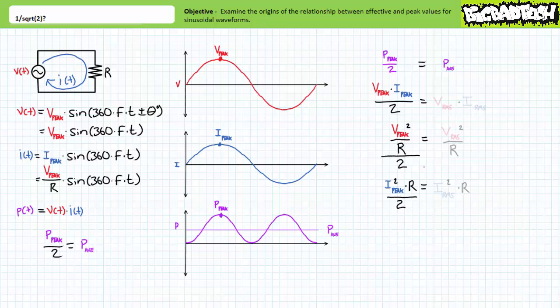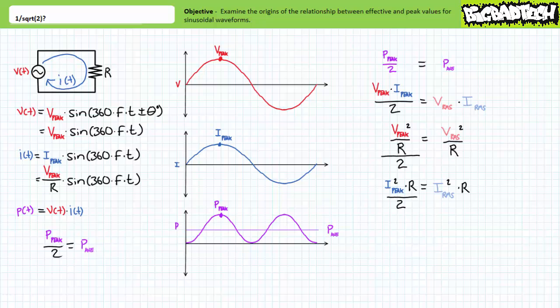The leap of faith occurs when we say that there's an effective RMS voltage and current value that would yield the same result. The same quantity of average power can also be experienced given voltage RMS times current RMS, or voltage RMS squared divided by resistance, or current RMS squared times resistance. This first equivalency is of little use to us since it makes use of two unknowns. The second and third iterations, however, allow us to establish some equivalency between peak and effective values.